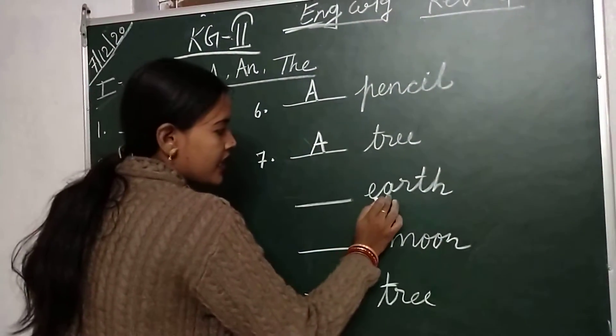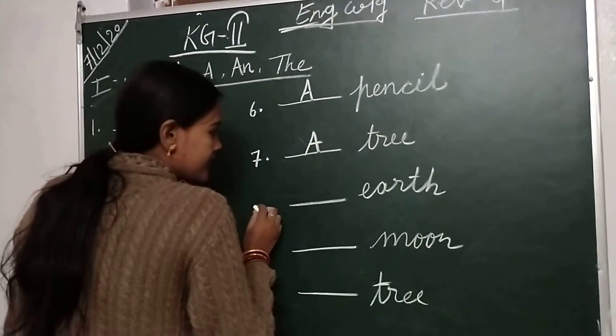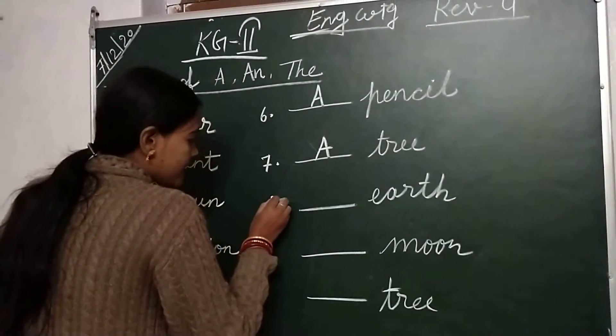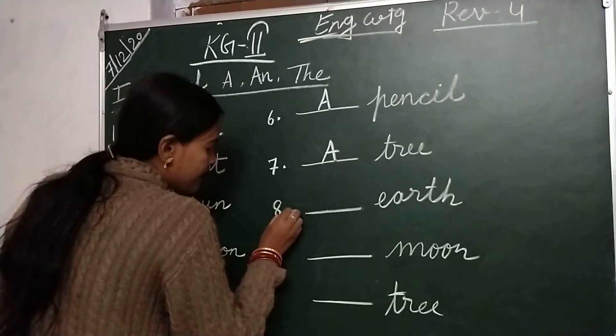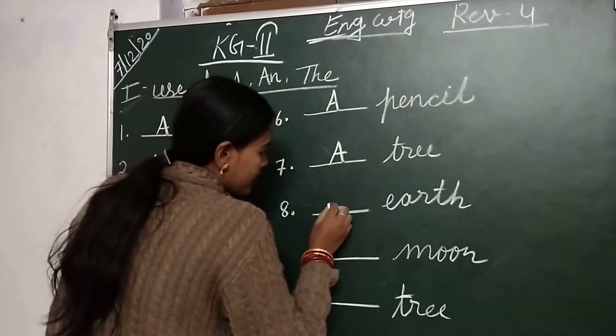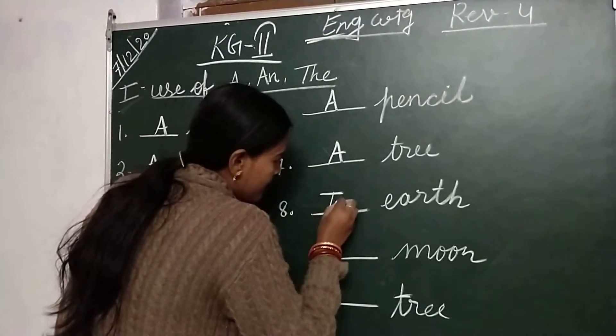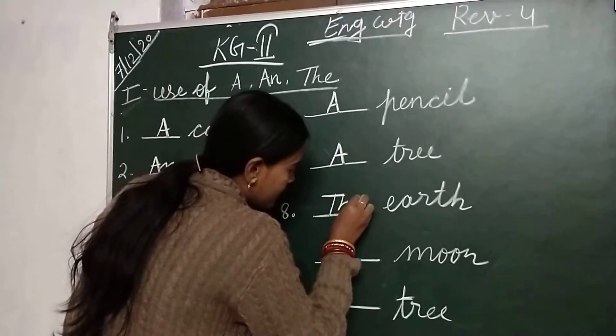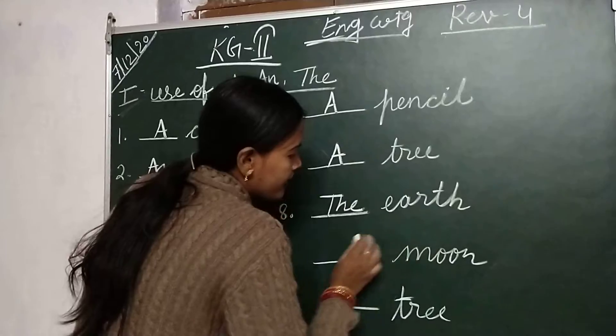Next is earth. E-A-R-T-H, earth. Number 8: write down the earth.